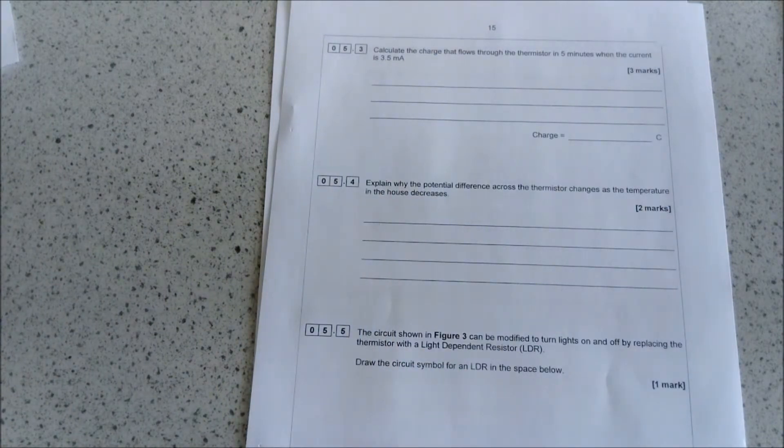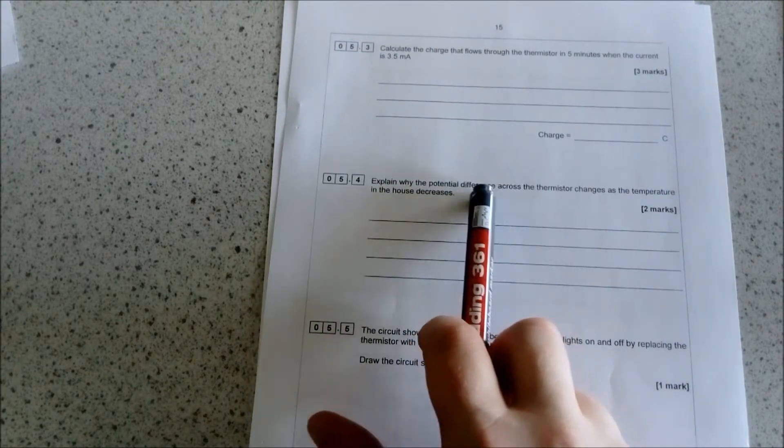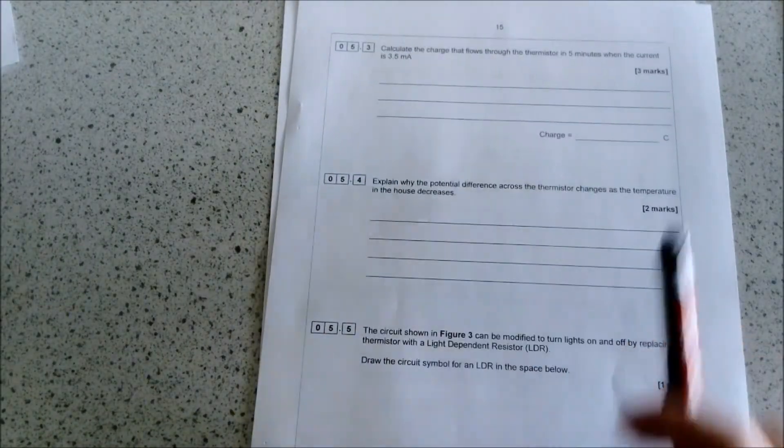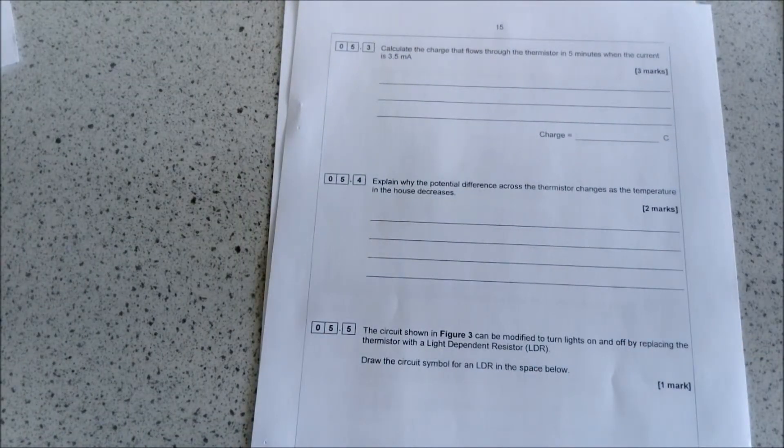The next part says: explain why the potential difference across the thermistor changes as the temperature in the house decreases. There are a few things that you can put, but the two main things you'll have to think about is what is going to affect the potential difference, and it's going to have something to do with temperature. So you might want to talk about: as the temperature decreases, the potential difference increases, and this is because the resistance increases.